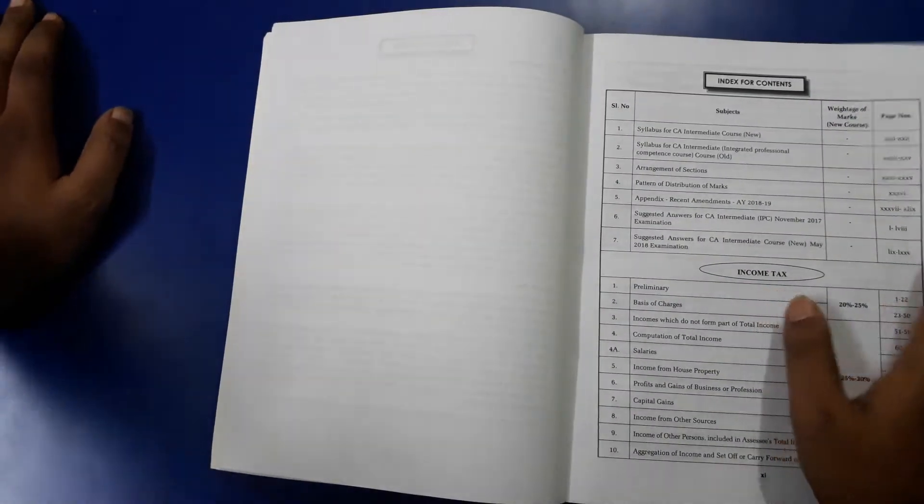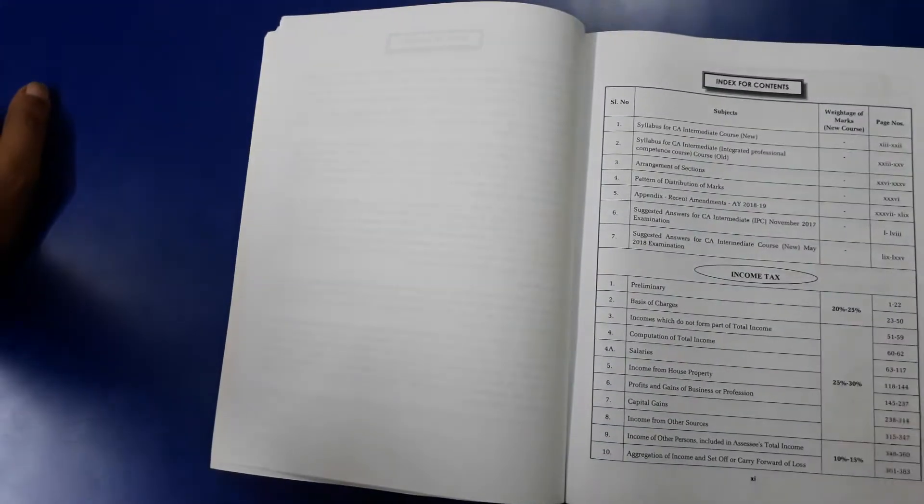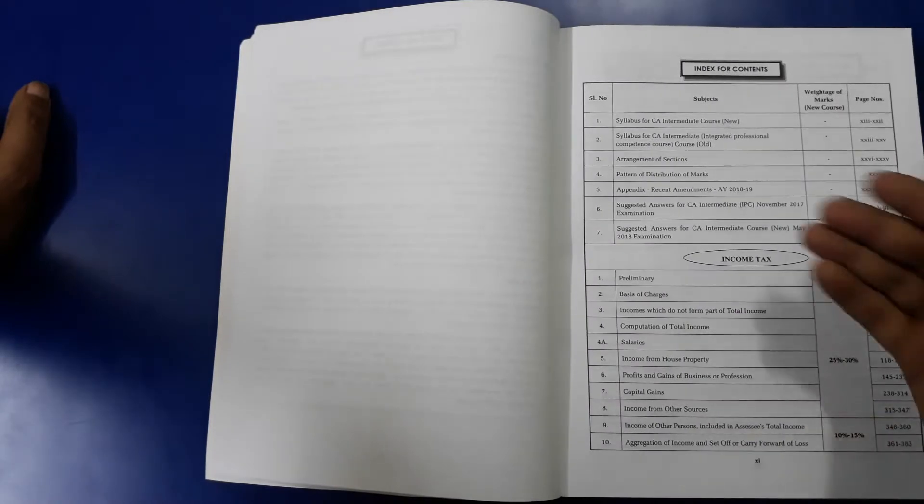Here you will see the author information, about the author. Then you will see the index part. In the next part, you will see 27 chapters.